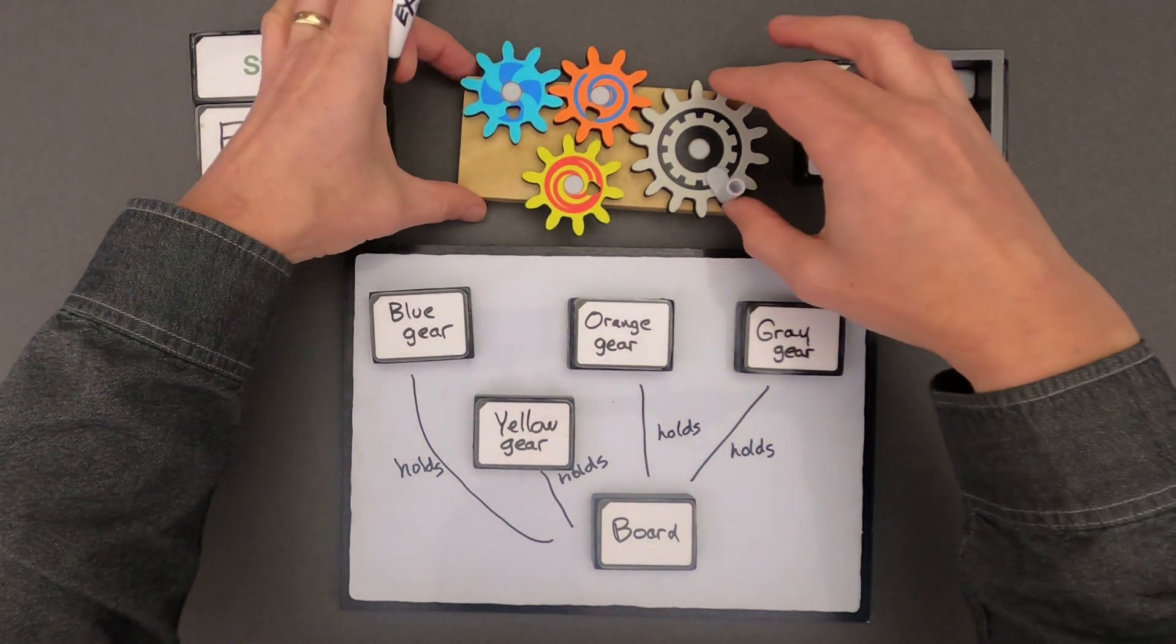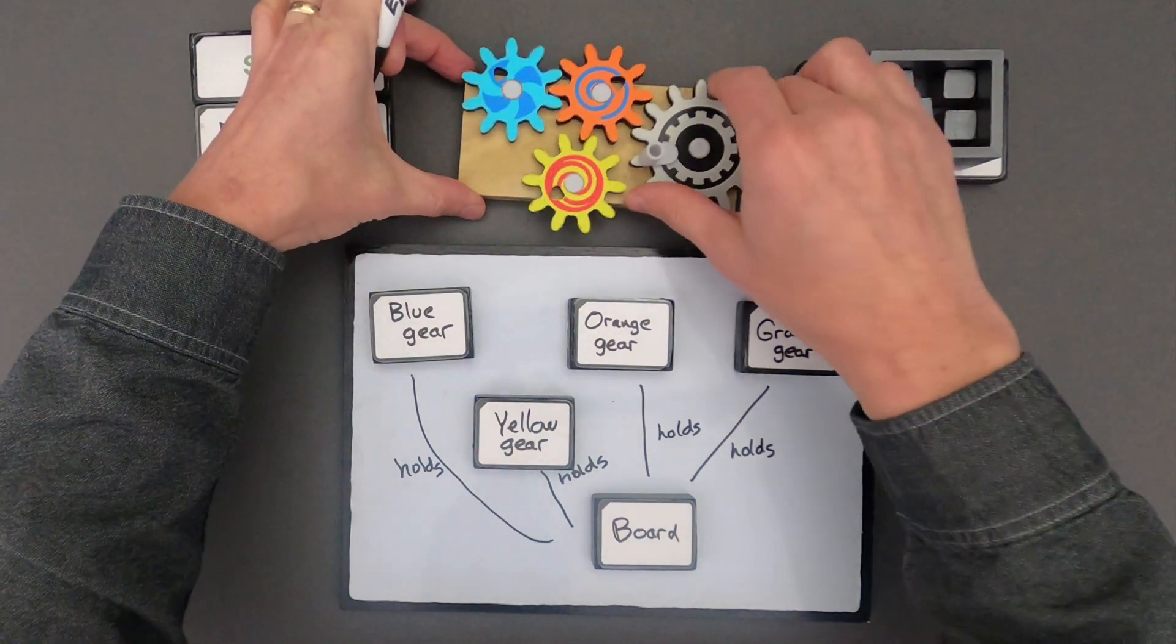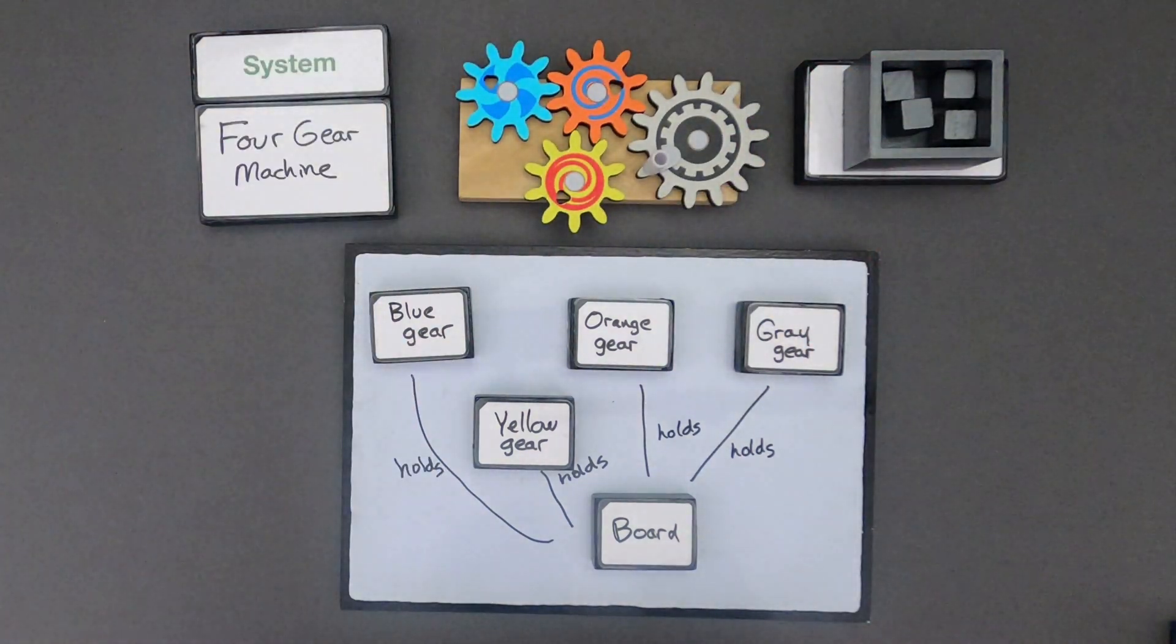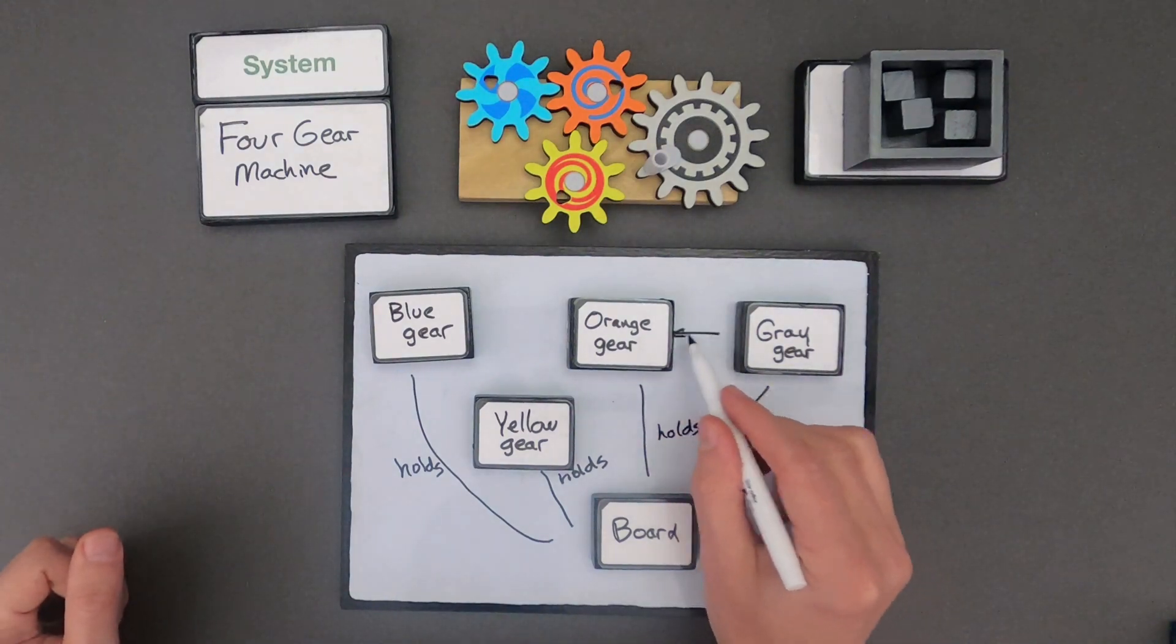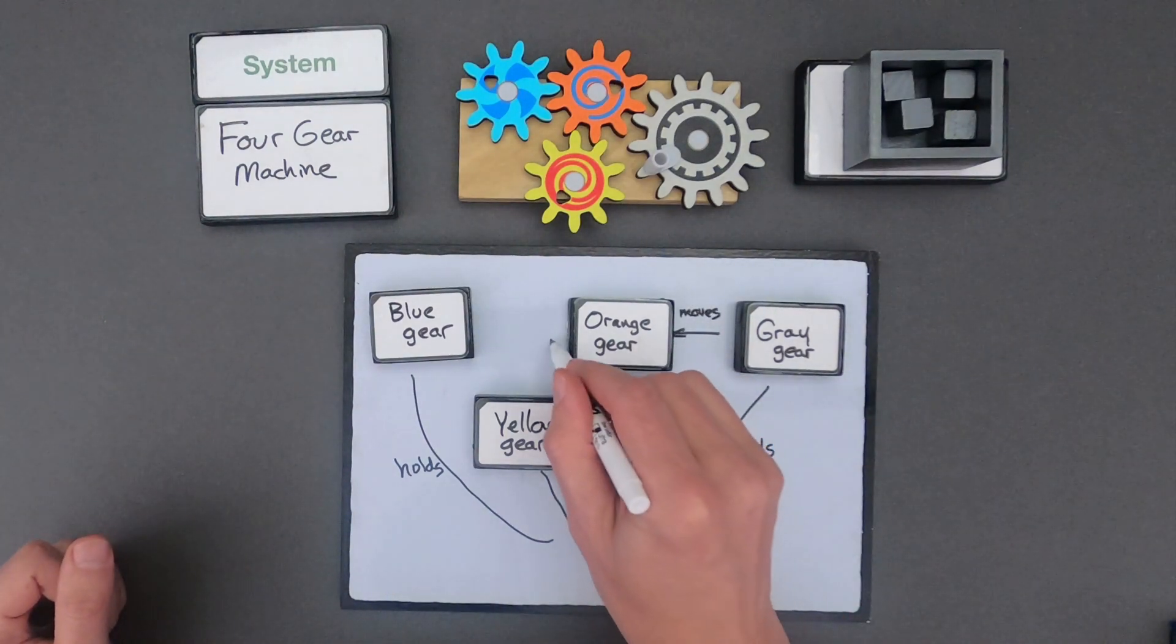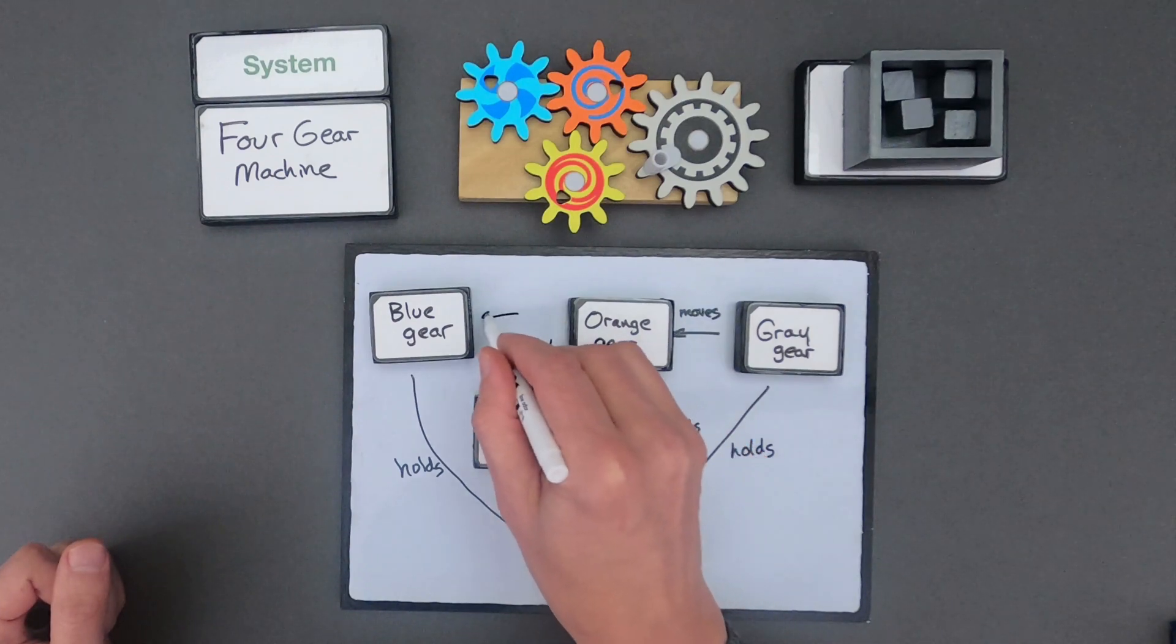The next thing we should do is figure out how does this machine really work. So when I move the gray gear, what that's doing is it's moving the orange gear. The orange gear, in turn, is moving the yellow gear, and it's moving the blue gear.